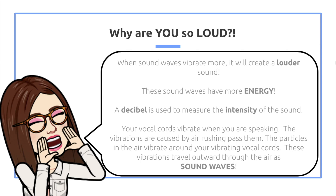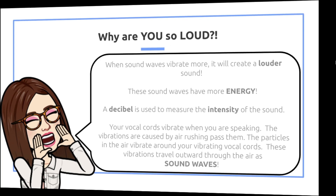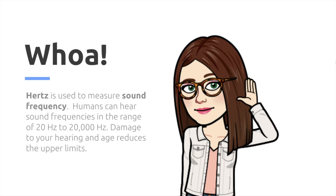Your vocal cords vibrate when you are speaking. The vibrations are caused by air rushing past them. The particles in the air vibrate around your vibrating vocal cords, and these vibrations travel outward through the air as sound waves — that's how we talk!